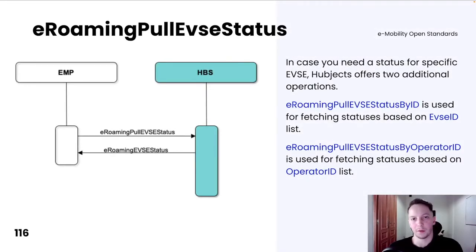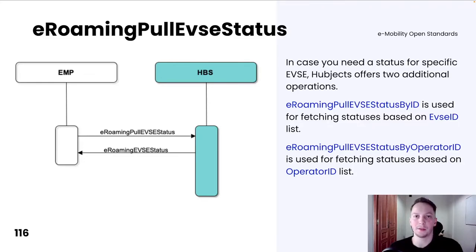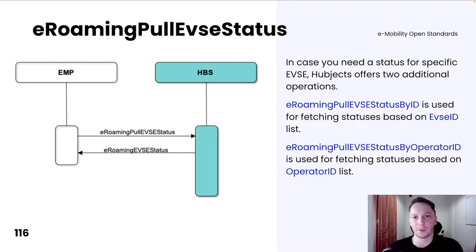Hubject offers two additional functionalities for fetching EVSE statuses built on top of the eRoaming pull EVSE status operation. The first one is eRoaming pull EVSE status by ID, used for fetching statuses based on an EVSE ID list. The second one is eRoaming pull EVSE status by operator ID, used for fetching statuses based on an operator ID list. Both functionalities are very important for EMP, as those filtering criteria are very useful in practice.